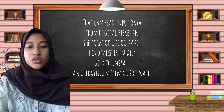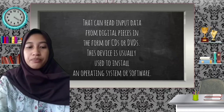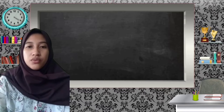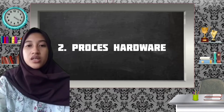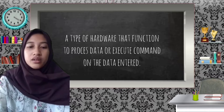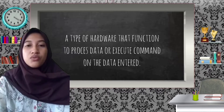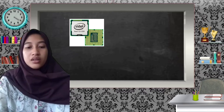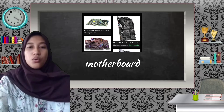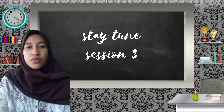The second is process hardware. Process hardware is a type of hardware that functions to process data or execute commands. The main processing hardware of a computer system is the processor, as well as the VGA, sound card, and motherboard. Sri Rostika will deliver an explanation of the process hardware.